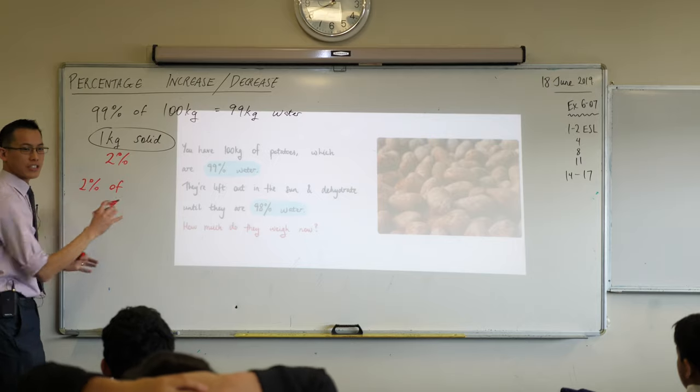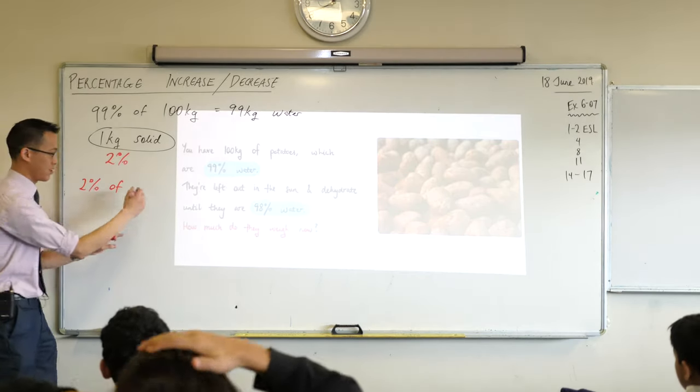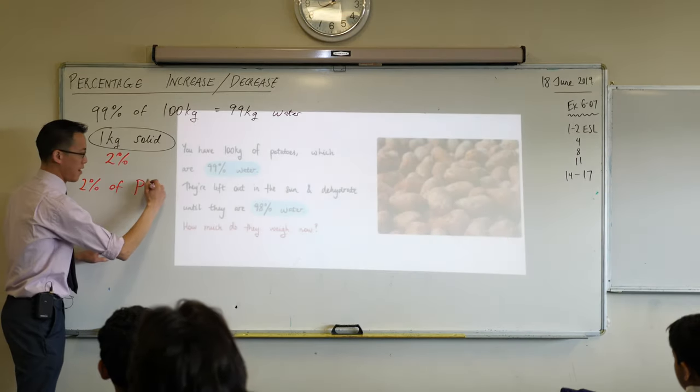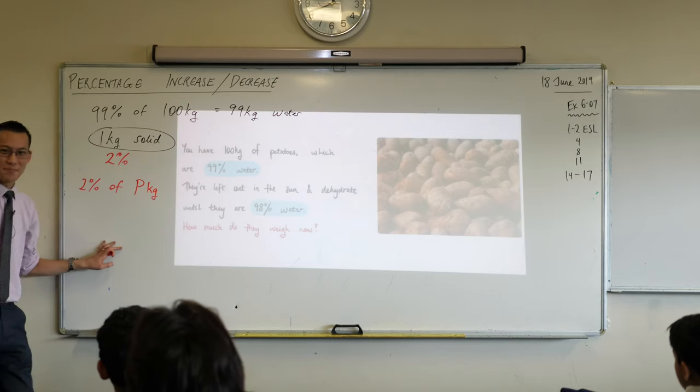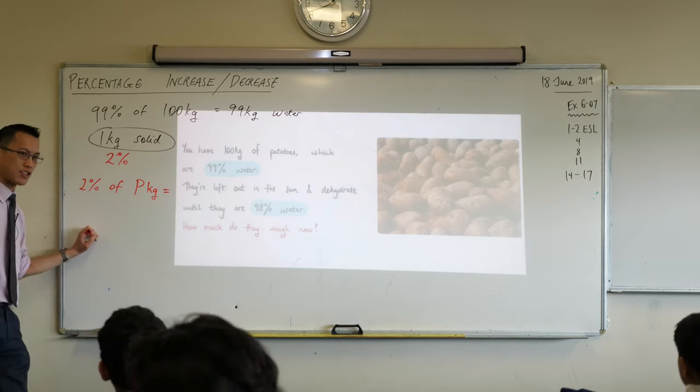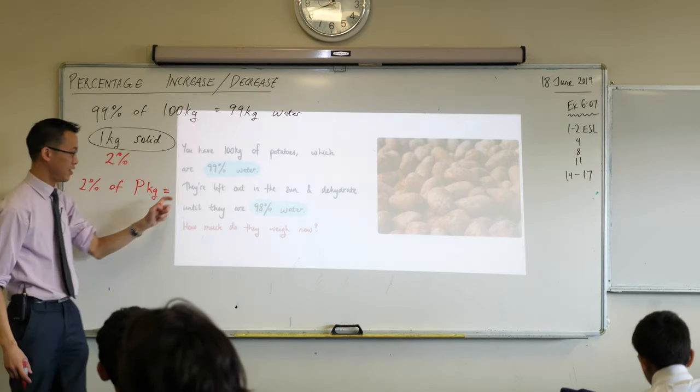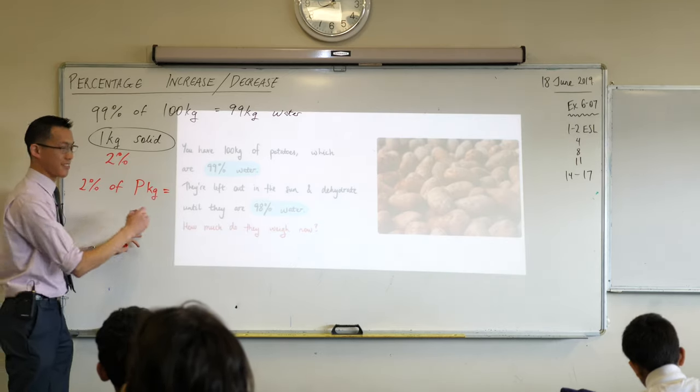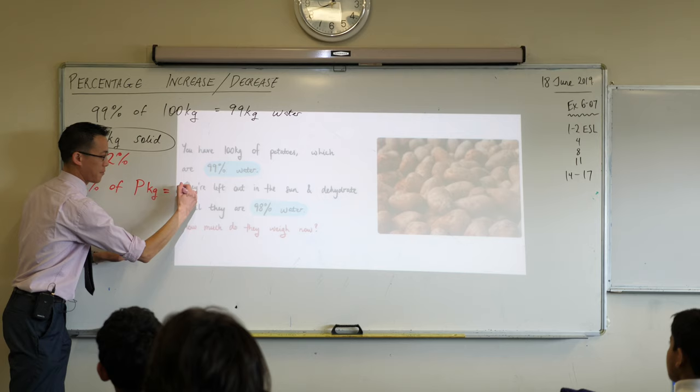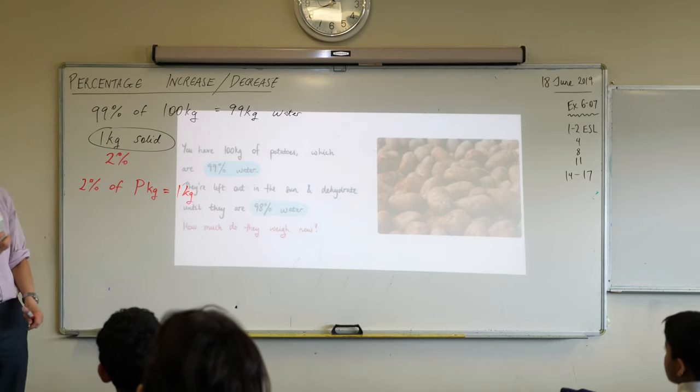Okay, so 2% of, now I actually don't know, I don't know how many kilos there are in the end. That's the question, right? So I'm just going to give it a name. I'm going to call it, let's call it P for potatoes. P potatoes. There are P kilos left and we know how many there should be. How many kilos there are at the end? How many kilos are there? This is the solid stuff. There's one kilogram right there.